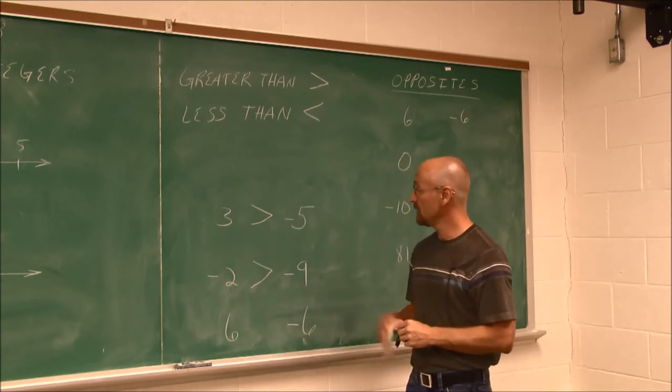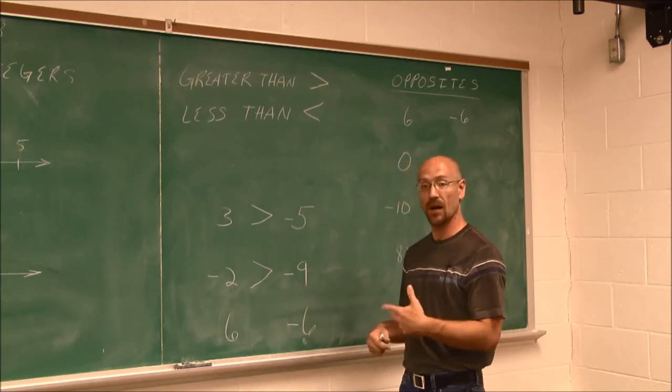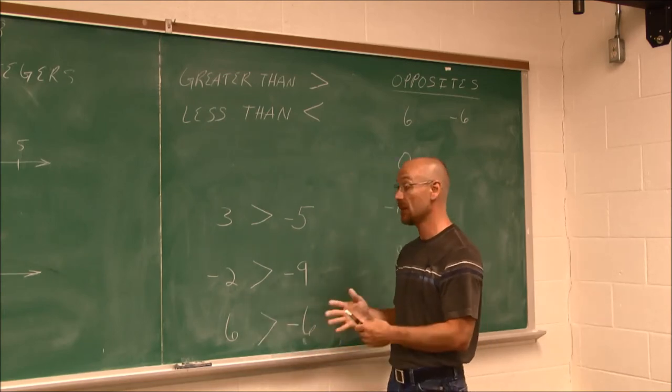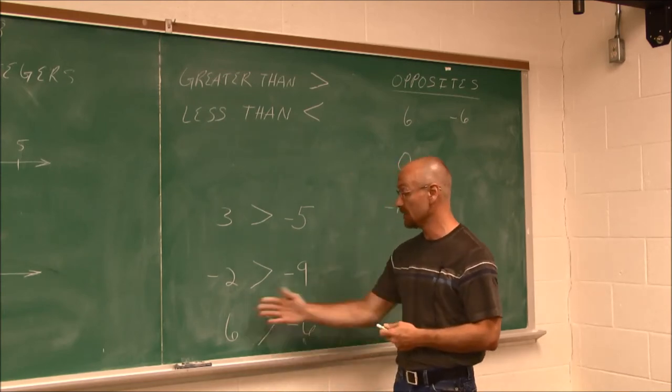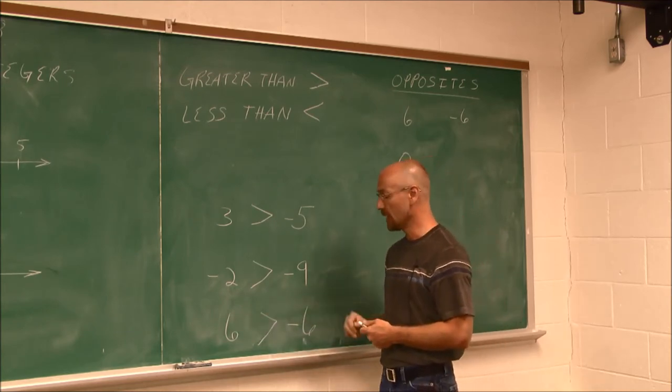If we look at these two values, it's very similar to this one. 6 and negative 6. Obviously, 6 is greater than negative 6, because on a number line, it is to the right of that value. This is to the right of 0, this is to the left of 0, 6 is greater than negative 6.